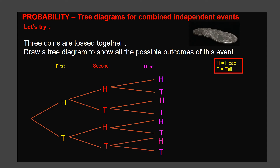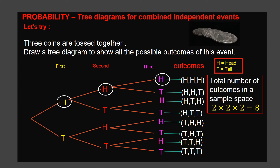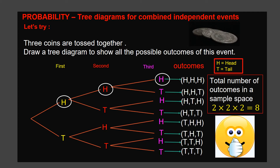Now list all the possible combinations of this event. The outcome for the first coin is H, second coin is H, third coin is H — written as H, H, H, which means we are getting three heads. Likewise, you can list all the other combinations. Will you get eight total possible outcomes? Well done, very good.